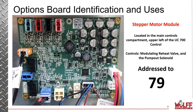The stepper motor module is located in the main controls compartment, which is positioned in the upper left of the UC 700 control board. This controls the modulating reheat valve and the pump out solenoid. This board needs to be addressed to 79.